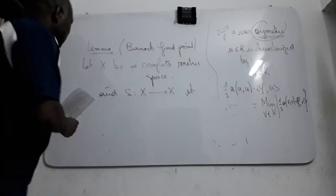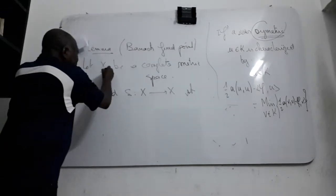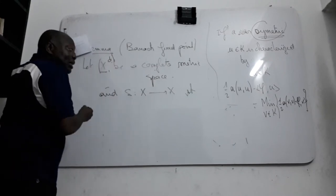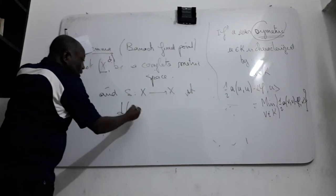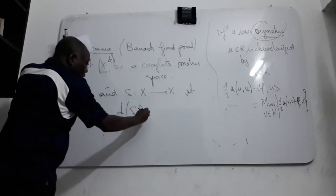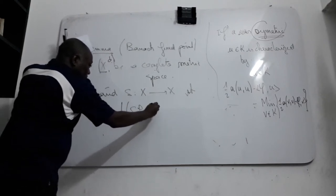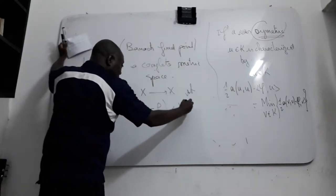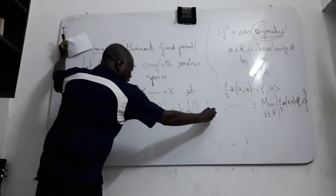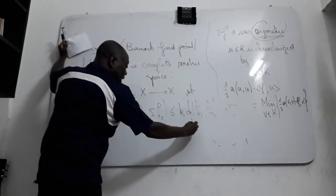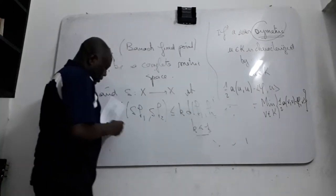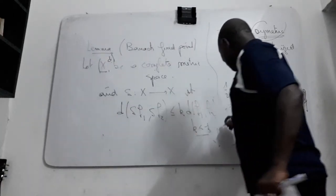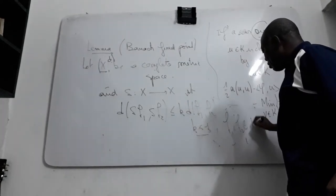Say that you have the distance, it is metric space, so you have this distance. Say that the distance of X F1 and X F2 is less than K times the distance of F1, F2, like this, where K is strictly less than 1, and for X two elements of this one, F1, F2 element of X.